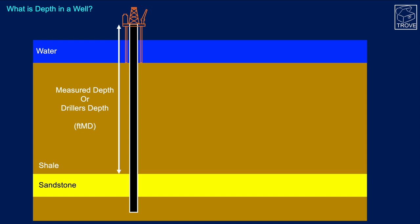Measured depth is commonly measured from the rig floor and goes all the way down to whatever level you're actually measuring to. Often it's measured in feet MD — measured depth — though it could be metres as well.